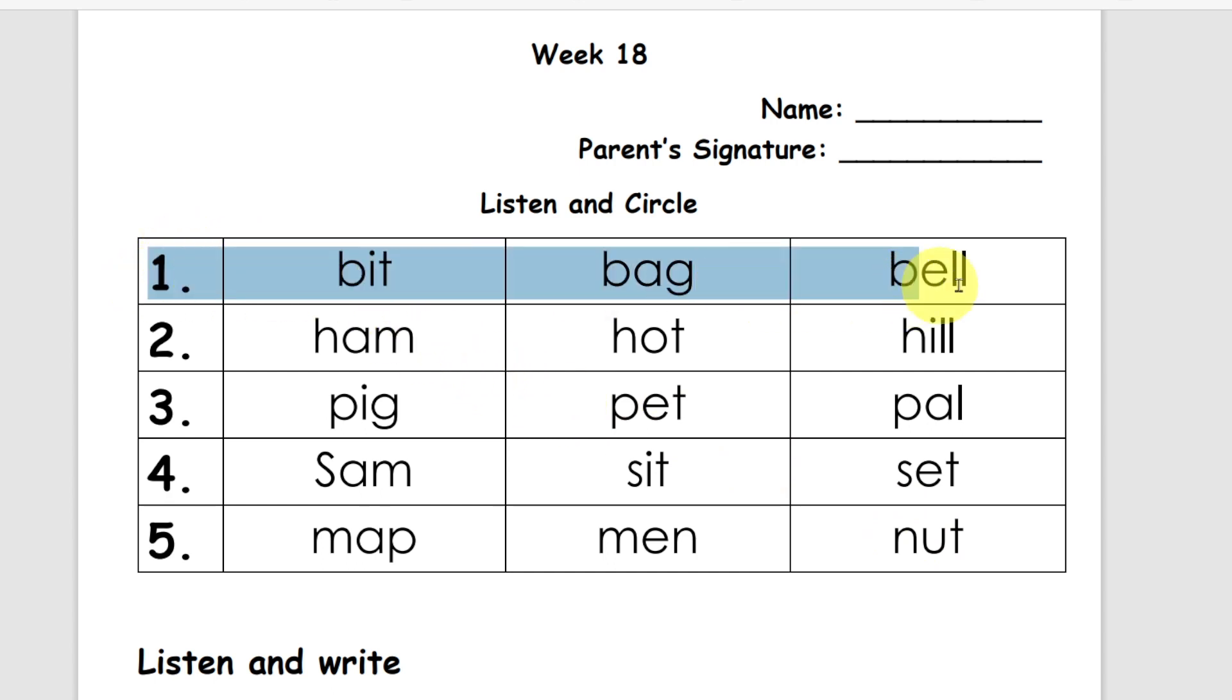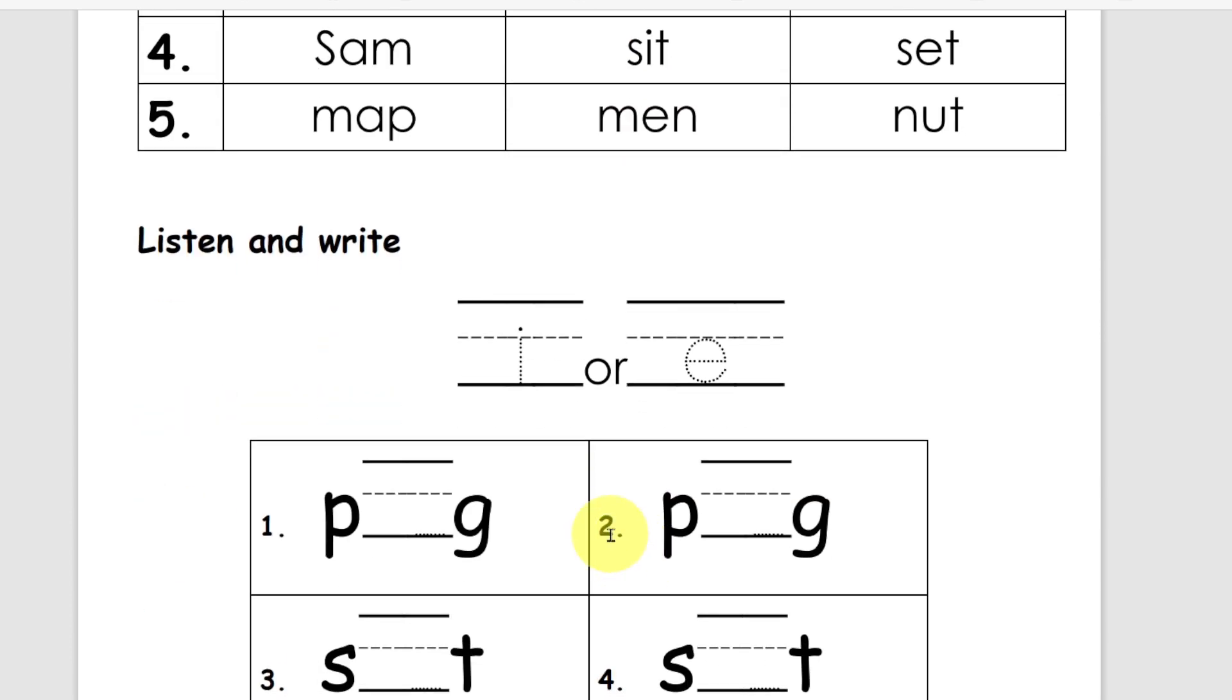Alright number one, listen and circle. Number one, bit. Circle bit. Number two, circle hot. Number three, circle pal. Number four, circle Sam. And last one number five, circle men. Great job, let's move on.